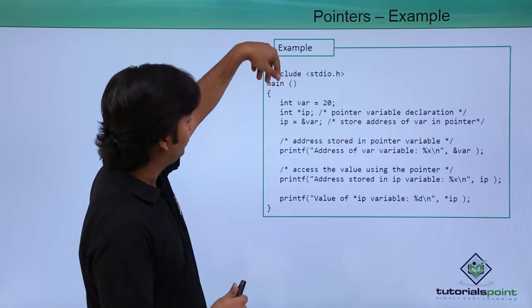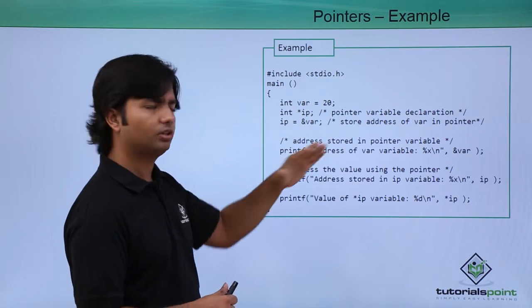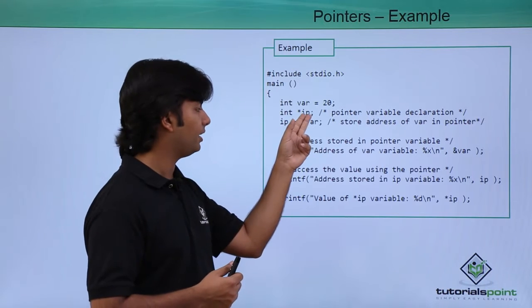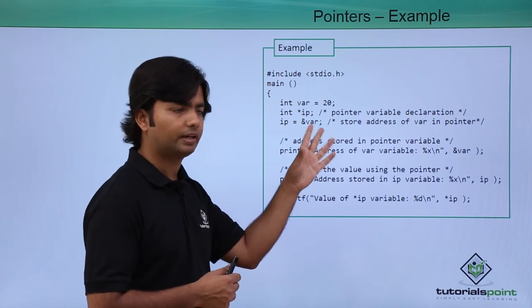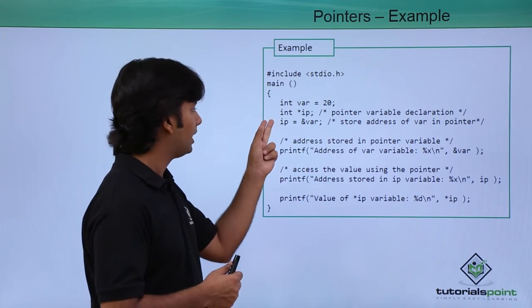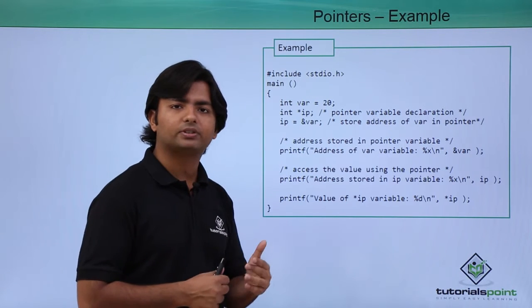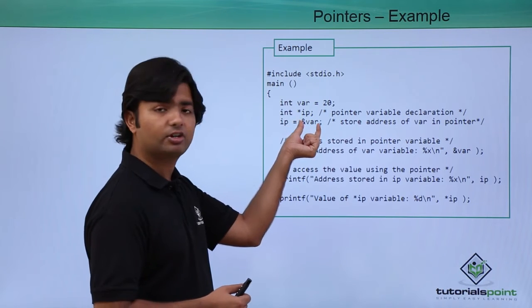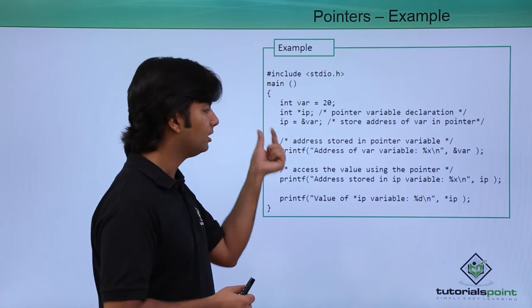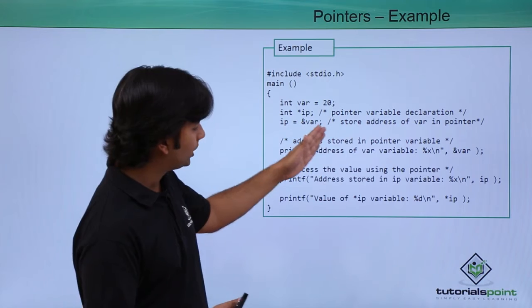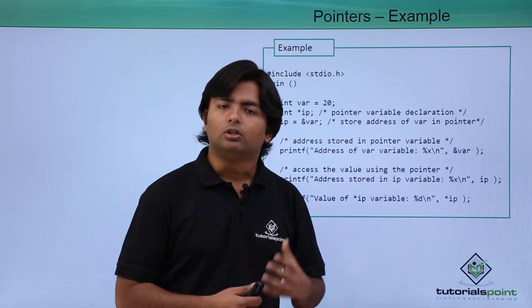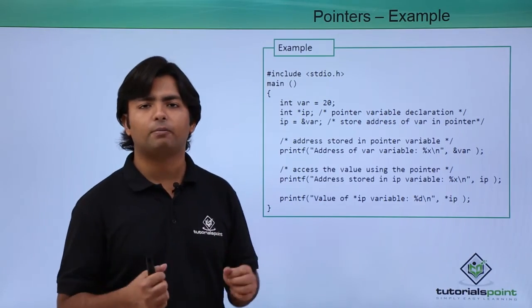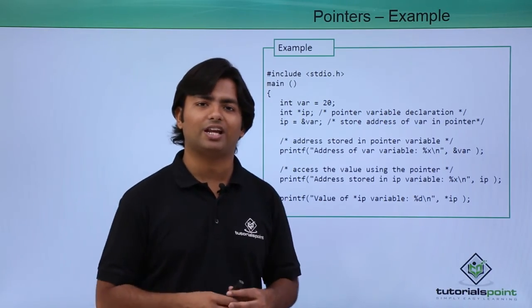For example, var is a variable storing the value 20. After that, define an integer pointer and assign the address: ip = &var. The ampersand var gives the address of the variable, which is stored in the integer pointer ip, and you can then print it. Rather than discussing further here, let's see practically how to implement pointers in C.